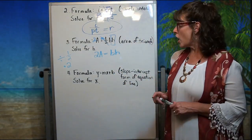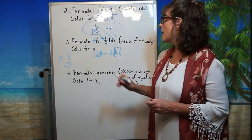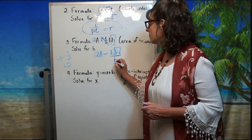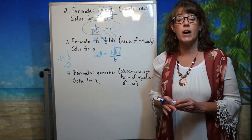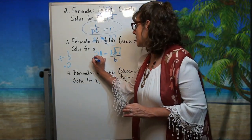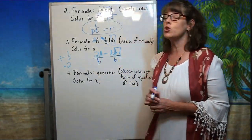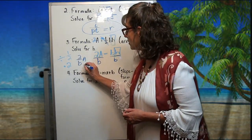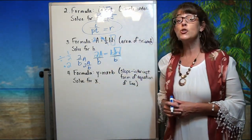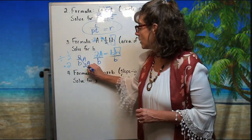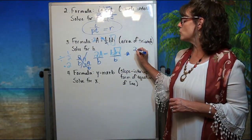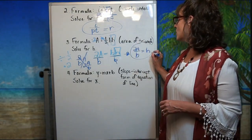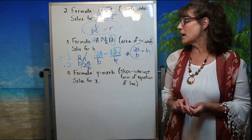But h is still not by itself — it's being multiplied by b. So I do the opposite of multiplying by b and divide by b. Remember, you're dividing the entire side by b — not just the a, not just the two, but the entire side. That leaves me with 2a divided by b, and these cancel over here, getting h all by itself. There it is, rearranged and solved for h.